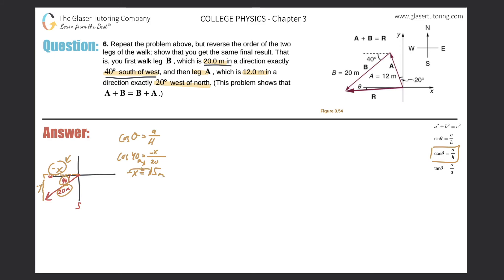Now let's find the negative y component. The y is on the opposite side of the angle, so we use sine. Sine of theta equals opposite over hypotenuse. Sine of 40 equals negative y over 20. Take the calculator and do sine of 40 times 20, which works out to be about 13. Remember to carry the negative sign over.